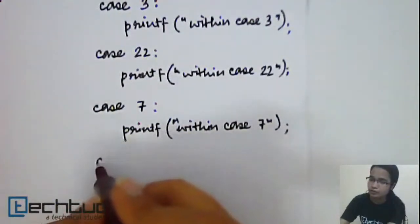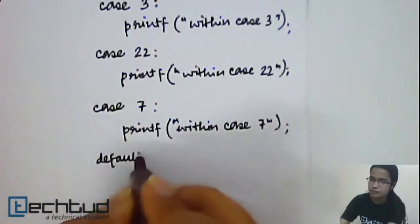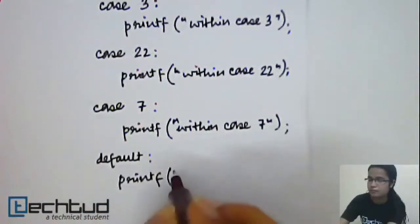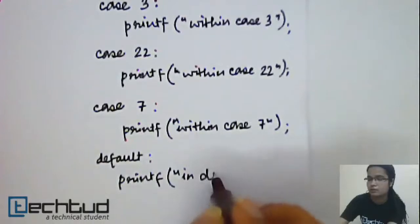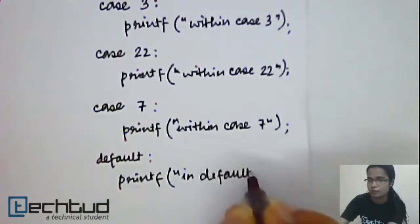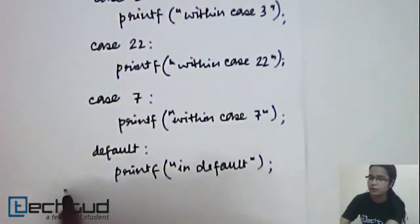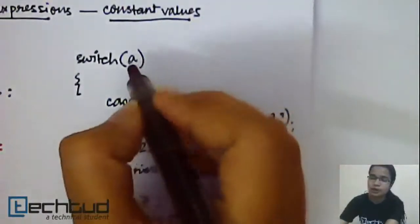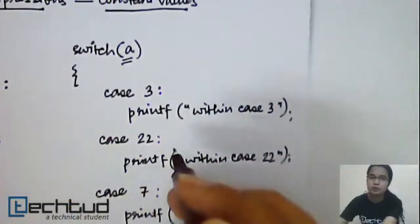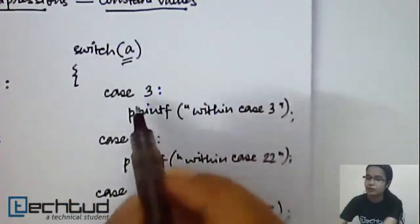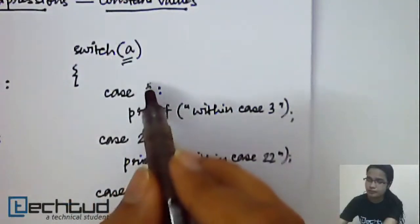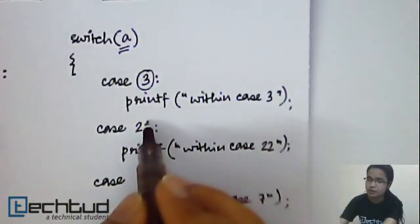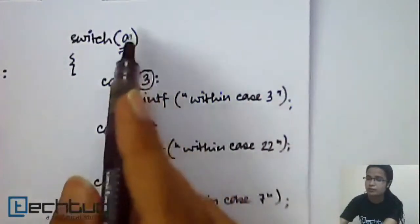Finally, you write your default. So what will happen when we run the program? If the given value of a is maybe 22, the control will come here. This 3, it is not equal to 3. So it is equal to 22. If a is equal to 22, the control will come here.